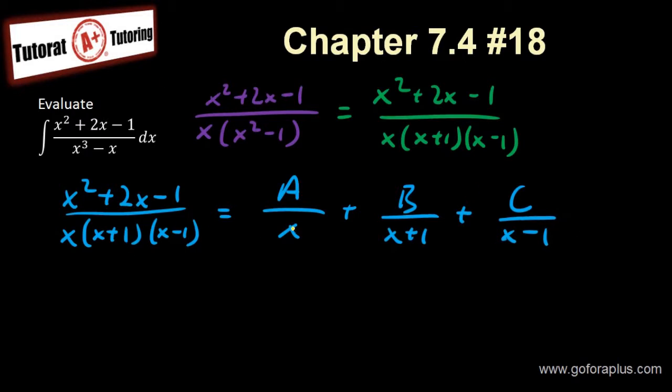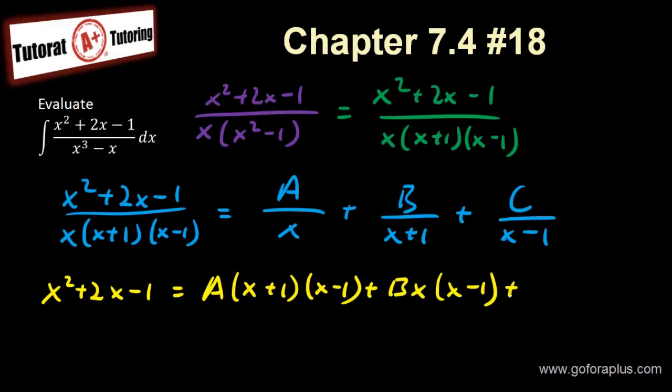I can put it on common denominator. So I have x squared plus 2x minus 1 equals A times (x plus 1)(x minus 1) plus B times x times (x minus 1) plus C times x times (x plus 1).